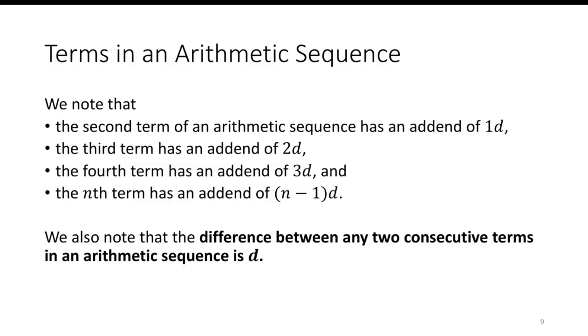Note that the second term of an arithmetic sequence has that add-in of 1 times d, the third term has 2 times d, the fourth term has 3 times d, the nth term has an add-in of n minus 1 times d. We also note that the difference between any two consecutive terms is going to be that d.